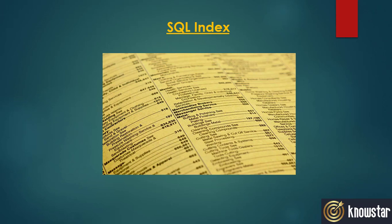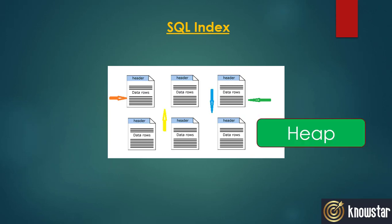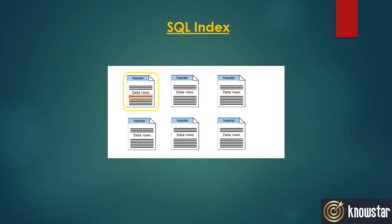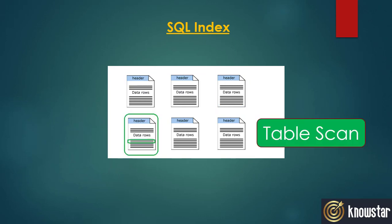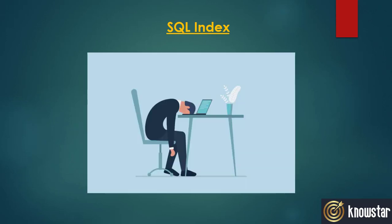Let's suppose we have the same information in a database table. As we keep on adding data to our table, the data will be stored in an unordered way in the absence of an index — this is called a heap. If we want to retrieve the phone number of a particular person, the database will have to search each and every record in the table to find the match. This is called a table scan, and it will continue till the last record in order to find all the matches.